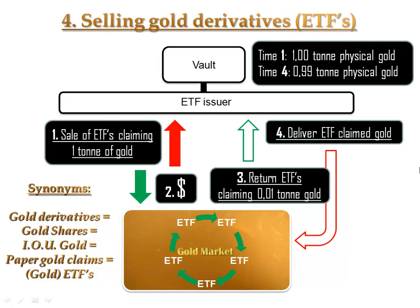As history has shown us time and time again, the issuers of paper claims to gold always seem to have trouble resisting the temptation of handing out more paper claims to gold than they actually have gold in the vaults. The practice of issuing more paper claims to gold can go unnoticed for quite a while, provided the mass of people won't demand the physical delivery of the gold they own a claim to. Watch the documentary Money is Debt or The Money Masters to understand how today's fractional reserve banking scheme and fiat currencies have come into existence. The same scheme of using paper claims to phantom gold that early bankers and goldsmiths used could be in place right now without the world noticing.